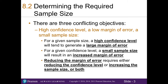Recall that we learned about the three conflicting objectives when developing a confidence interval estimate. As a refresher, for a given sample size, a high confidence level will generate a larger margin of error. And for a particular confidence level, a small sample size will result in an increased margin of error.